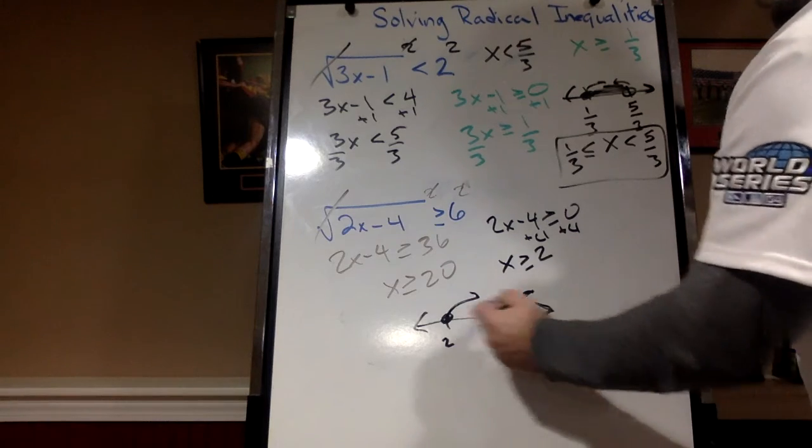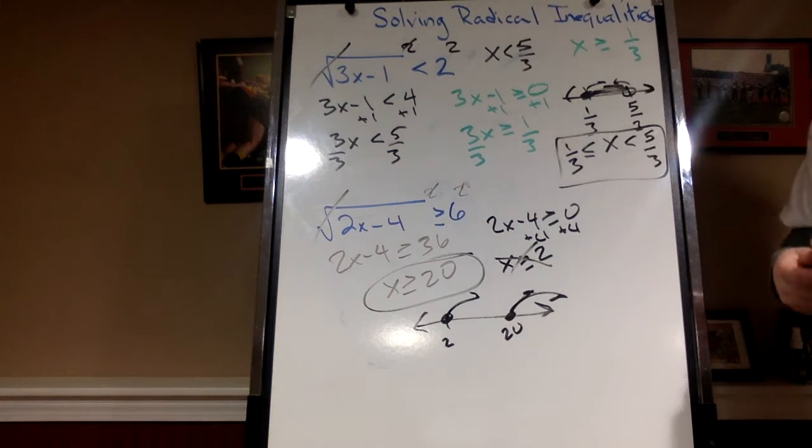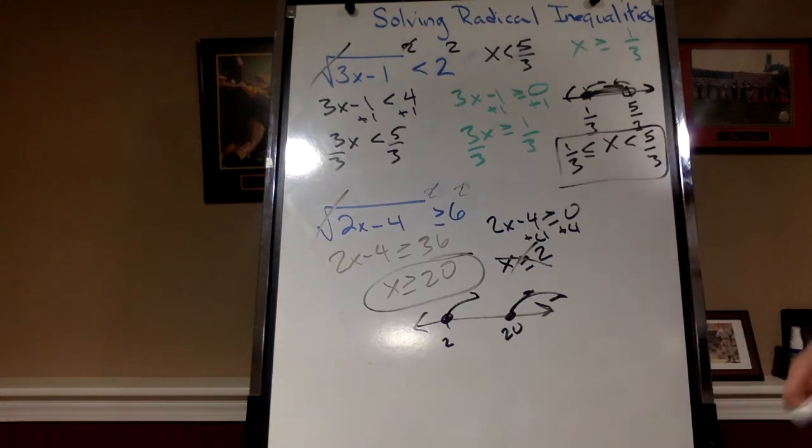Let's go. Where do they intersect? Right here. So x is greater than or equal to 20 is my solution. You might say, it's my only solution. Well, no.